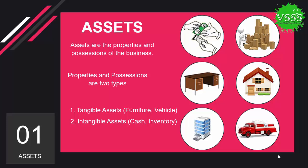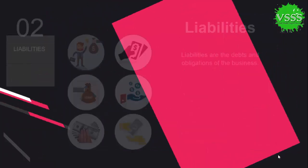Tangible assets are further divided into two categories. The first is current assets and the second is fixed assets. Current assets are those which are converted into cash within one year. Fixed assets are those which are not easily converted into cash.